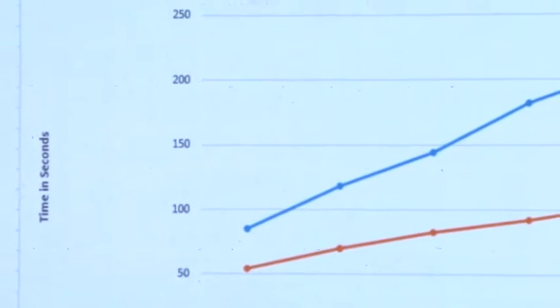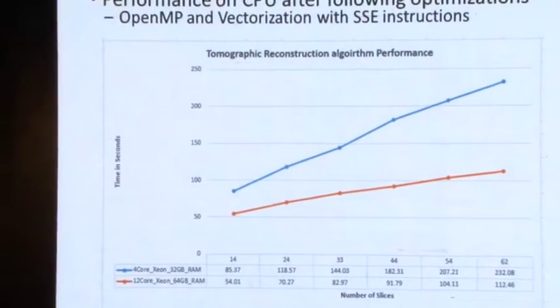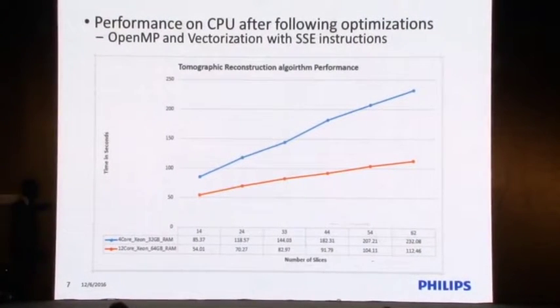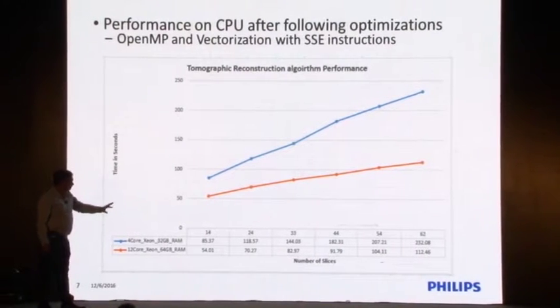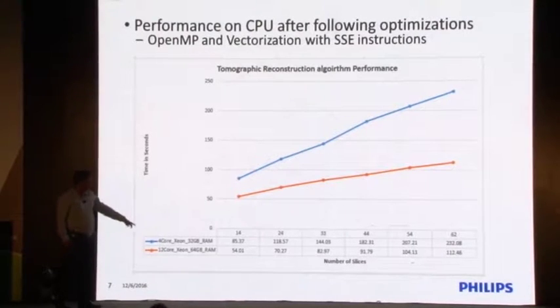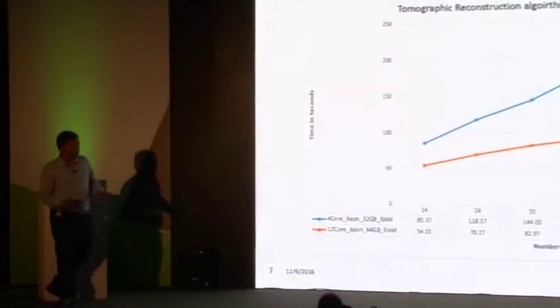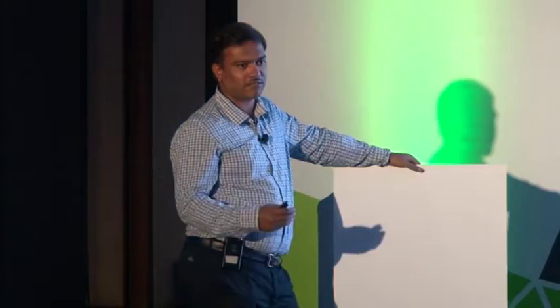While designing all of this, we developed a tomographic reconstruction algorithm — a statistical iterative, multi-stage algorithm. The fundamental problem is it takes a huge amount of time. After optimizing on CPU with OpenMP and SSE, a 4-core system still takes around 2.5 minutes and a 12-core CPU around 1.5 minutes. This was a big challenge — radiologists were happy with image quality and dose, but very unhappy with the long wait time.